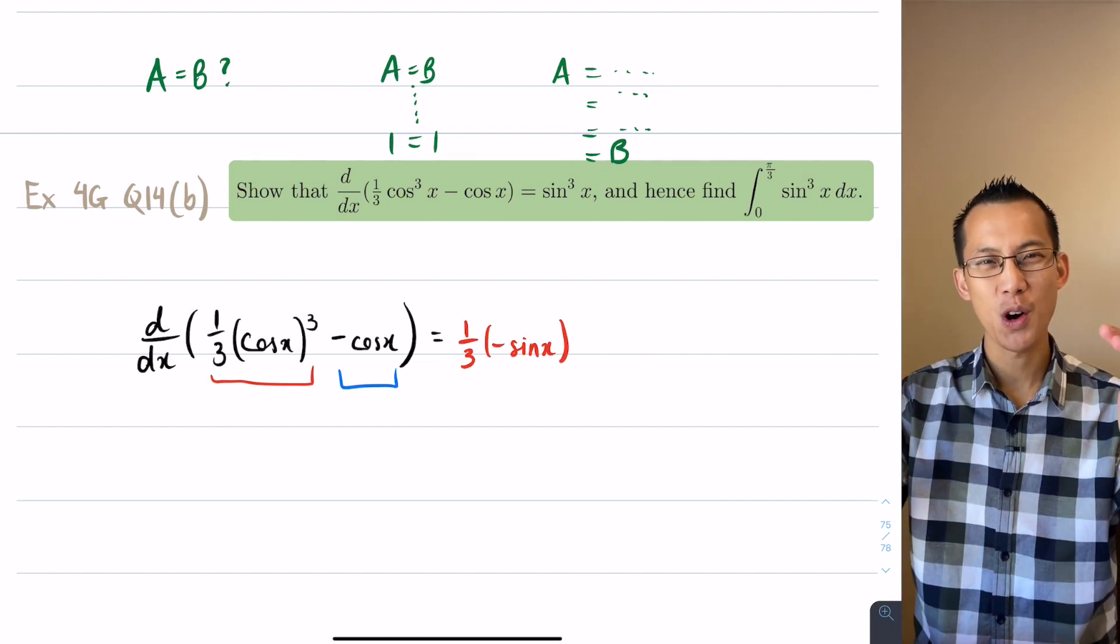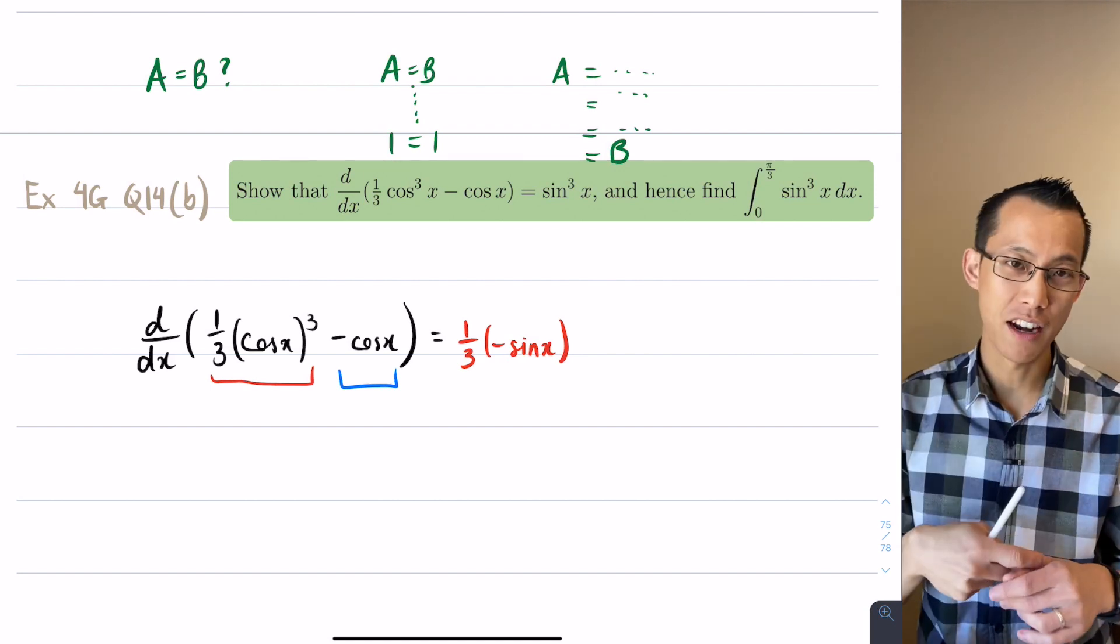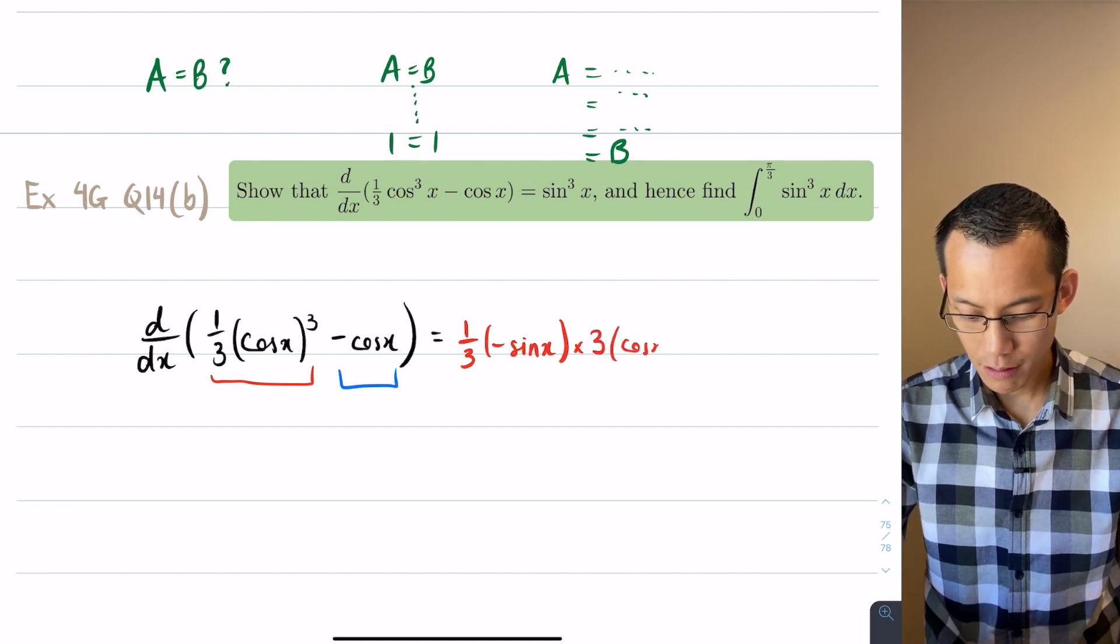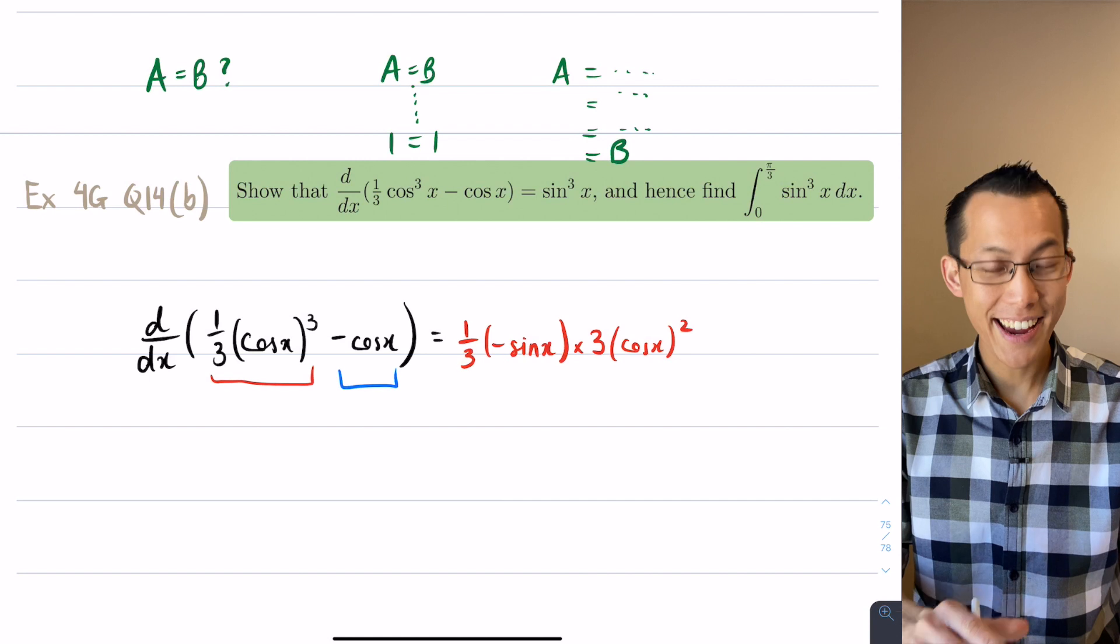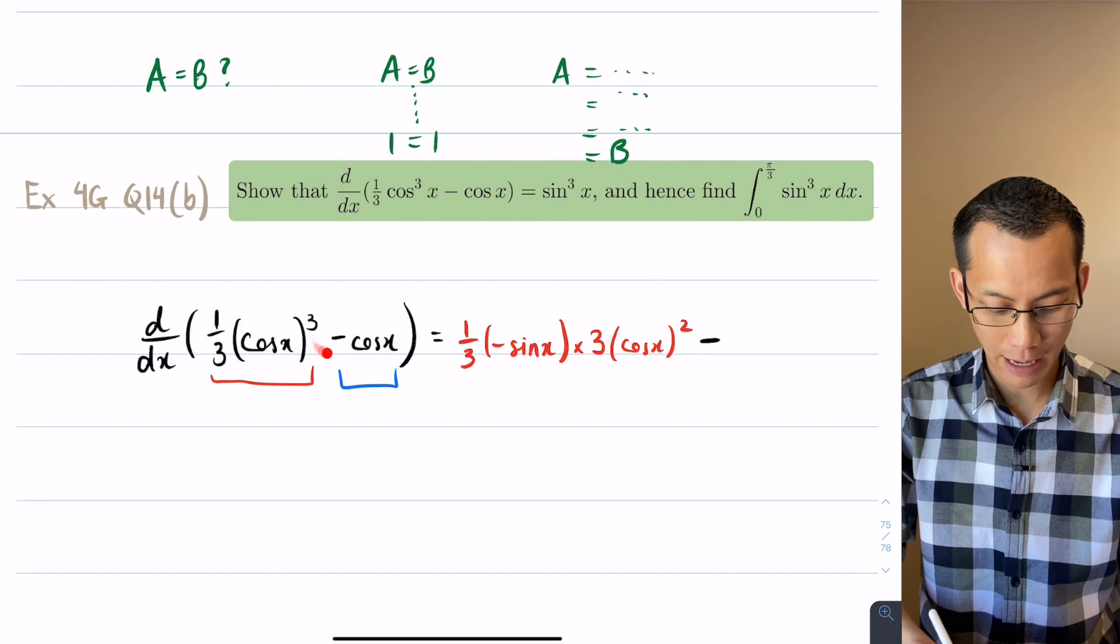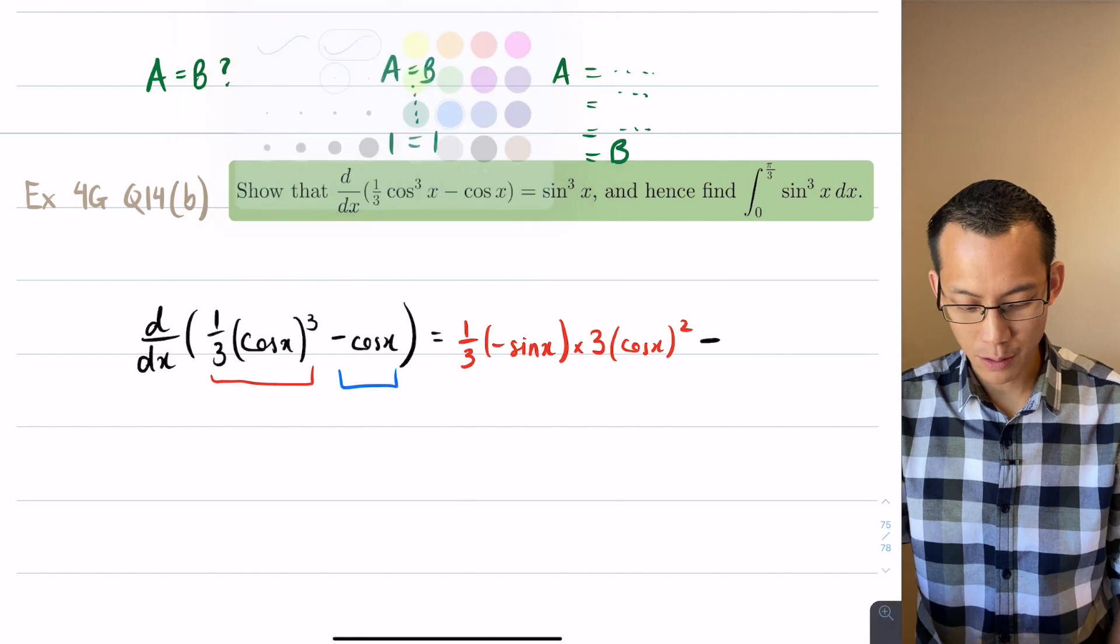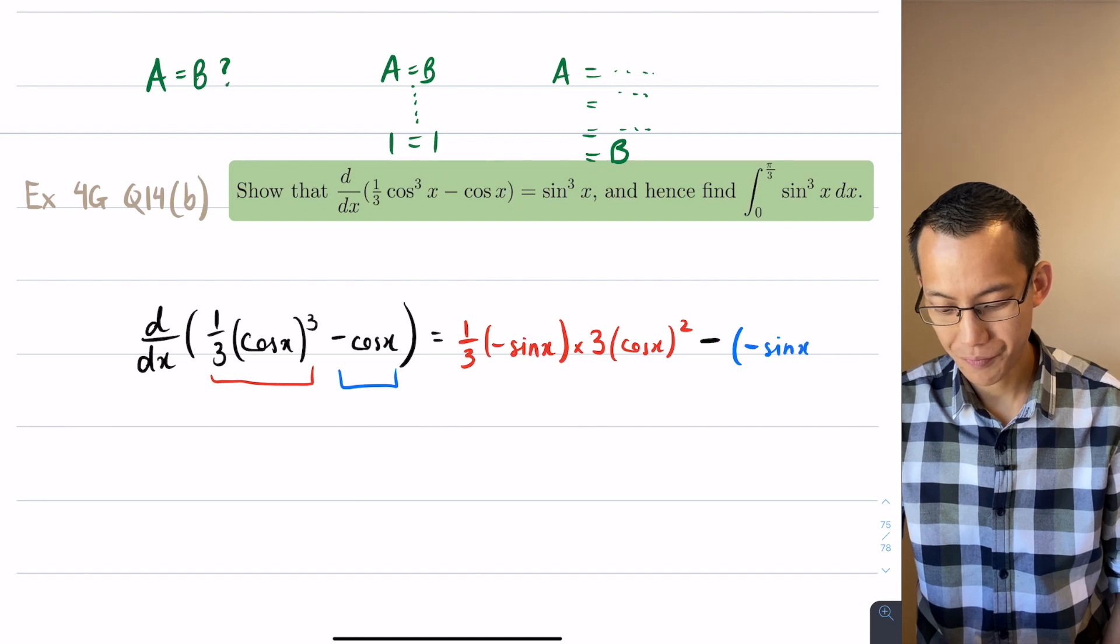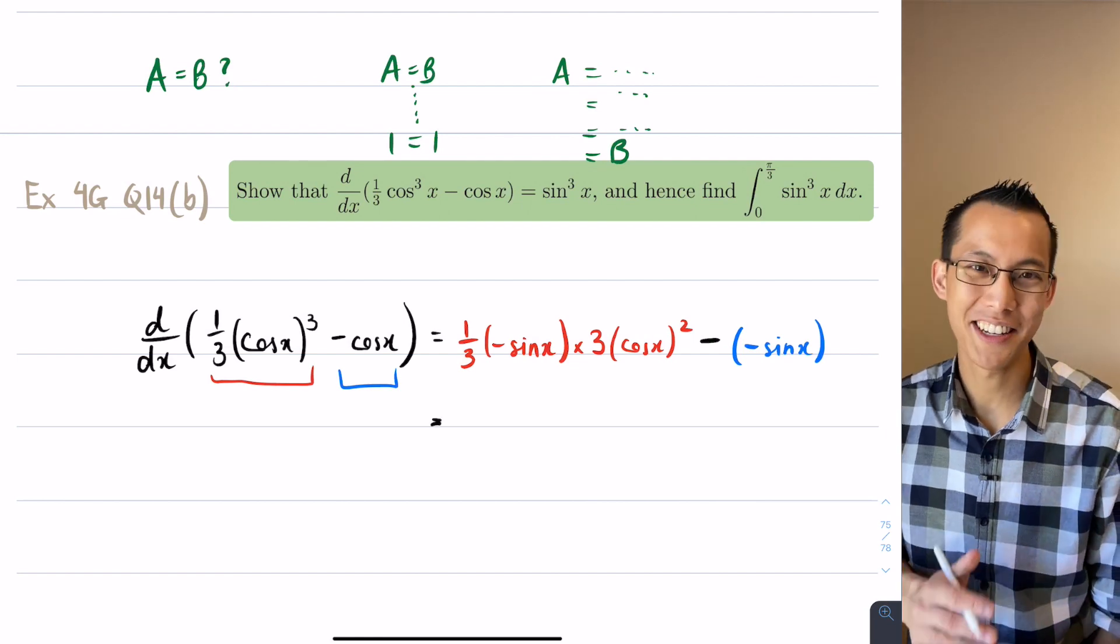I've got the outside which is cos x cubed, so when something's cubed I'm going to bring the index out the front and then divide by that new index. So I'm going to get 3 cos x squared. So now I've done the inside, I've done the outside, the red thing is done. Let's have a look at the blue one. I've got a minus sign that was just carried over from the original expression and then cos x. What's the derivative of cos x? We just did it, it's negative sine x.